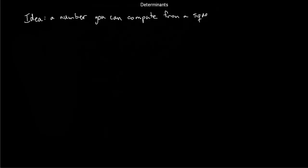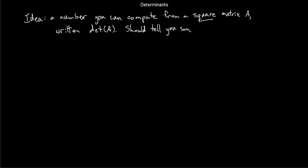It's important to mention right from the beginning that the matrix should always be square if I'm going to take a determinant. Non-square matrices don't have determinants. I'm going to write det of A for the determinant. It should tell me something useful or important about A — the determinant is going to tell us something important about A.